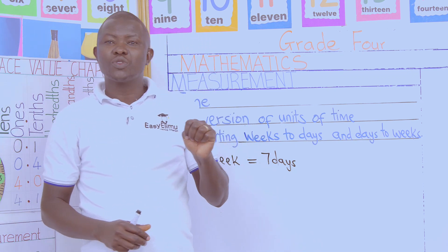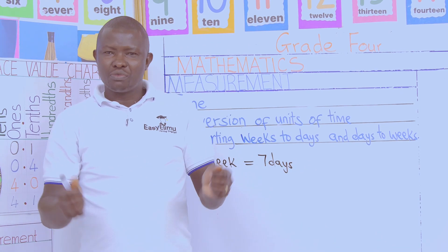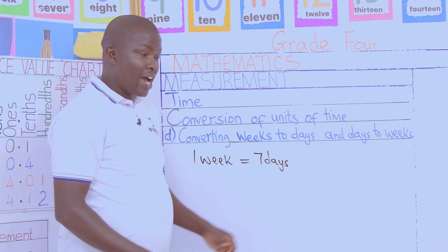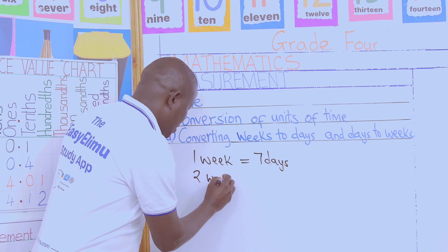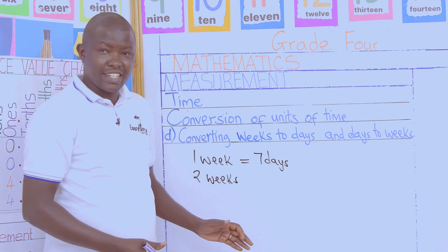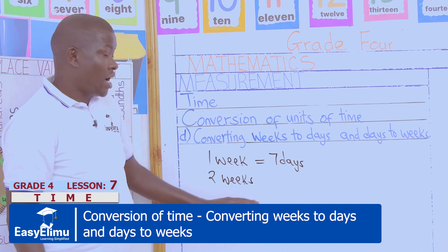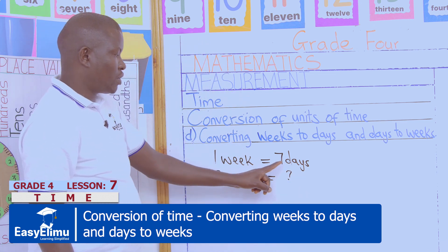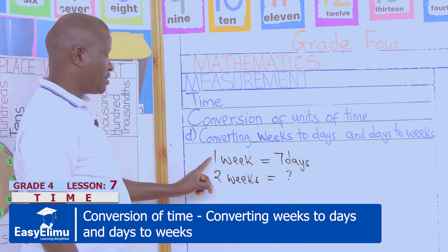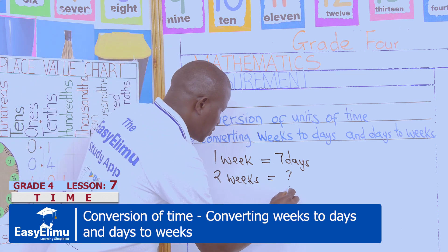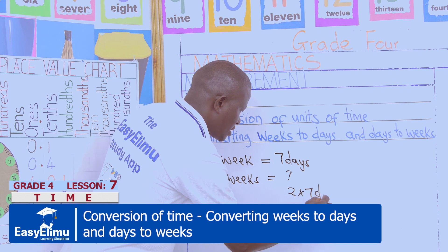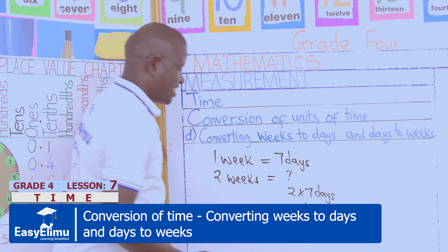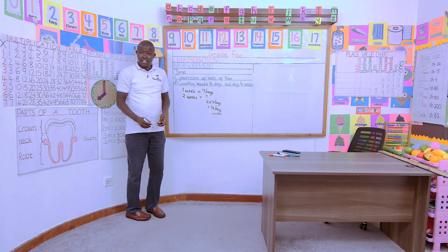Noting that five days we come to school, we rest two days, then we start again — this makes seven days. Now in our groups, if one week gives us seven days, two weeks will give us how many days? Victor, two weeks will give us how many days? We multiply two weeks by seven days divided by one week. Week and week cancel, so our answer is two multiplied by seven days, and we get 14 days. Two weeks make up 14 days.